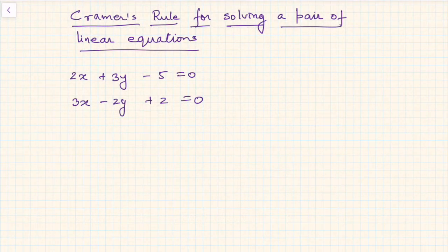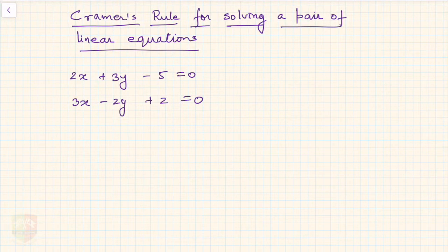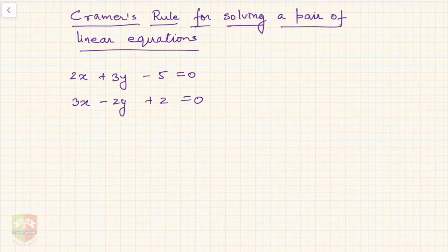In this session we are going to learn Cramer's Rule for solving a pair of linear equations. We have already learned the method of substitution, elimination, and cross multiplication. This is a new method which is very handy in solving a system of linear equations, especially when the number of variables is large. We will start with a simple pair of linear equations in two variables, understand the process, and then extend it to higher numbers of variables.